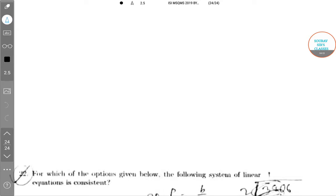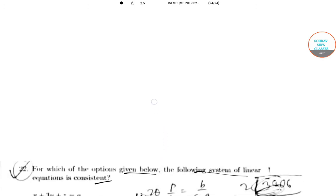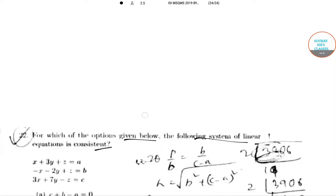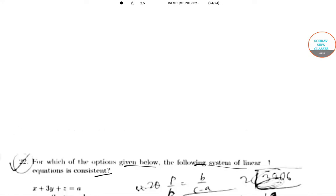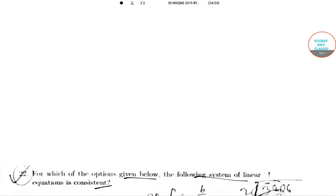Question 22: For which of the options given below is the following system of linear equations inconsistent? We have four options with equations: x + 3y + z = a, -x - 2y + z = b, 3x + 7y - z = c. We need to find for which value it is inconsistent. We know that a system of linear equations is consistent if it has either finite or infinite solutions.